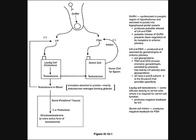Testosterone is also sent into peripheral tissues, where it is broken down by 5-alpha reductase and produces dihydrotestosterone — a more active form of testosterone. One product of GnRH stimulation is FSH. FSH activates the Sertoli cells, which produce inhibin. This inhibin inhibits excess FSH as a negative feedback.